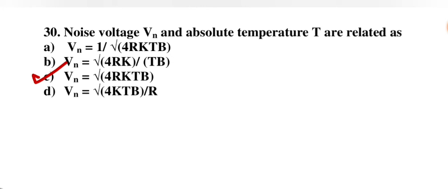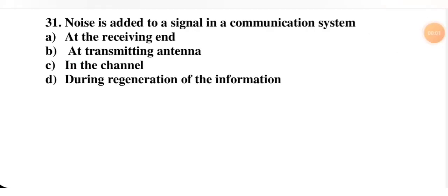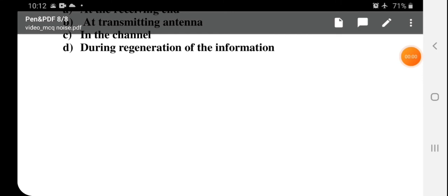Most important question: noise is added to a signal in a communication system — at the receiving end, at the transmitting antenna, in the channel, or during regeneration. The correct option is C — noise is added in the channel.